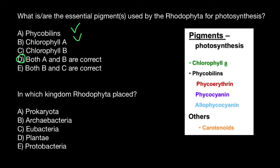Here are the variants to choose from: Prokaryota, Archaeobacteria, Eubacteria, Plantae, and Probacteria. In the kingdom Bacteria we can find only blue-green algae, but in the kingdom Plantae we can find green algae and red algae, and Rhodophyta means red algae.